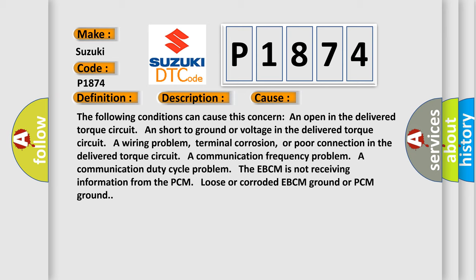An open in the delivered torque circuit and short to ground or voltage in the delivered torque circuit. A wiring problem, terminal corrosion, or poor connection in the delivered torque circuit. A communication frequency or duty cycle problem. The EBCM is not receiving information from the PCM, or there is a loose or corroded EBCM ground or PCM ground.